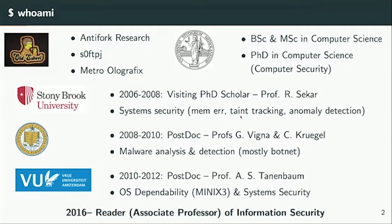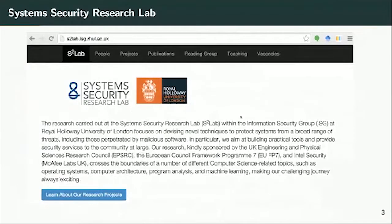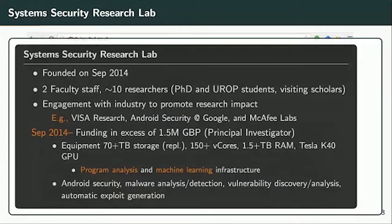Now I'm an associate professor of information security in the information security group at Royal Holloway University of London. When I joined the group in 2014, I founded the System Security Research Lab, which focuses on system security research. It's a small lab founded in September 2014 with a small group of researchers — PhD students, undergraduates, visiting scholars, and postdocs, roughly 10 people floating around. The underlying theme is to build on program analysis and machine learning to deal with threats to the security of systems, covering onboard security, malware analysis and detection, vulnerability discovery, and automated exploit generation.